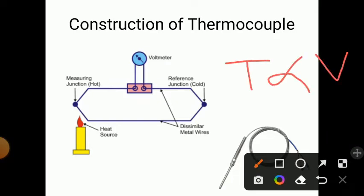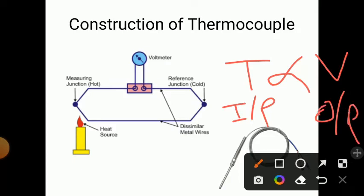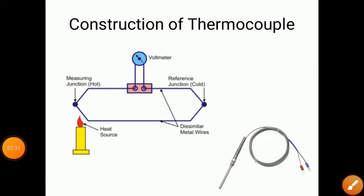The input is temperature change and the output is voltage change. As temperature increases at the hot junction, the voltage also increases in the voltmeter — temperature is directly proportional to voltage. The cold junction is kept at usually zero degrees Celsius, and the hot junction is placed where we want to measure the temperature. This is the principle of thermocouple.